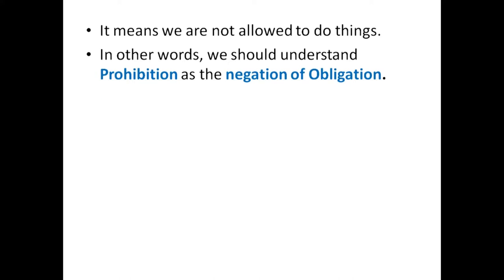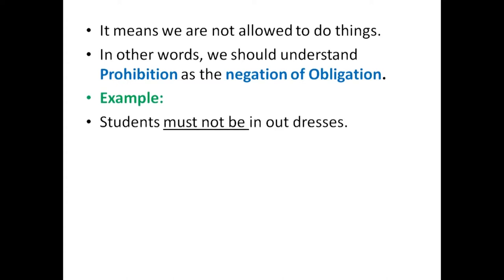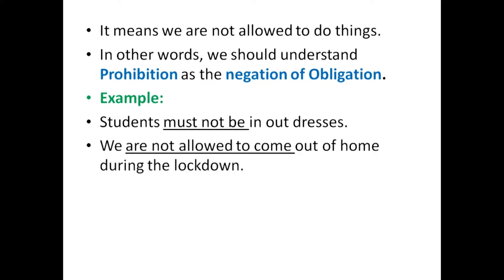Let's take some examples of prohibition. The first example: students must not wear outdresses — it is a prohibition that students cannot go to school in outdresses; they must be in their school uniform. Similarly, we are not allowed to come out of home during the lockdown. It is a rule applied by the government — a condition by law.